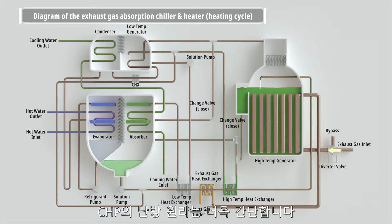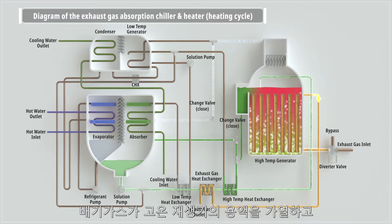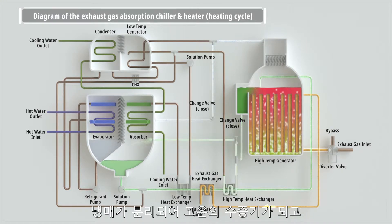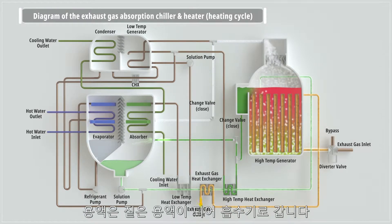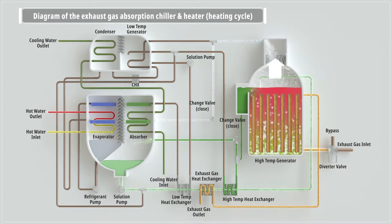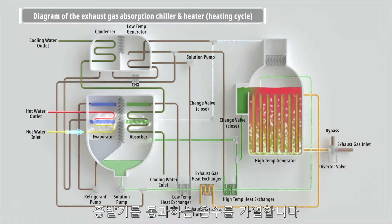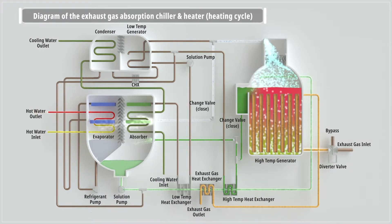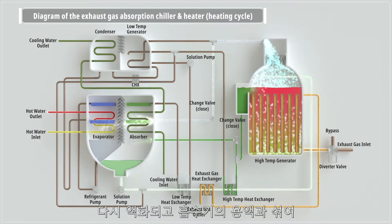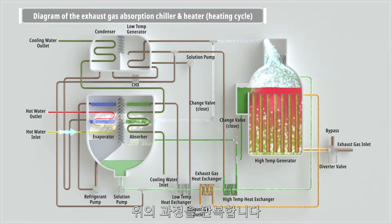CHP system heating works in simpler logistics. Heated by incoming exhaust gas in the high temperature generator, the solution releases refrigerant into vapor, becoming concentrated solution, which flows to the absorber. High temperature vapor flows to the evaporator, heating up incoming hot water. The vapor, condensed to liquid by releasing heat, is then mixed into the solution in the absorber, flowing to the high temperature generator, repeating the cycle.